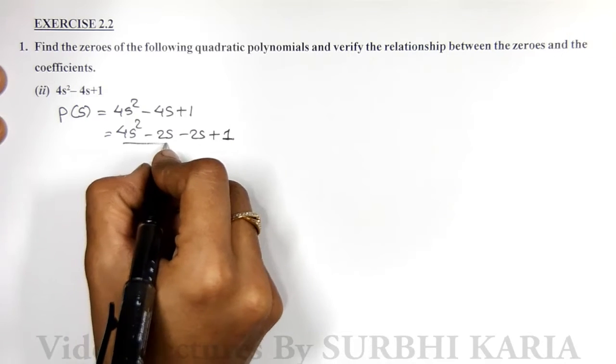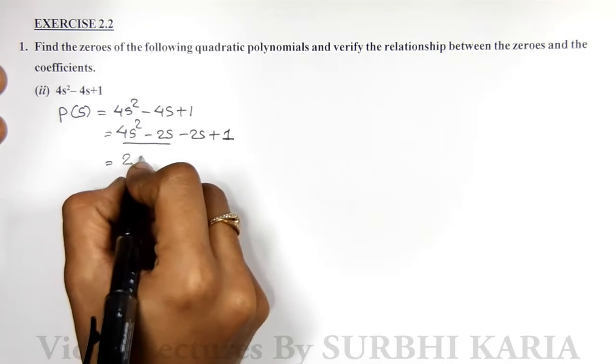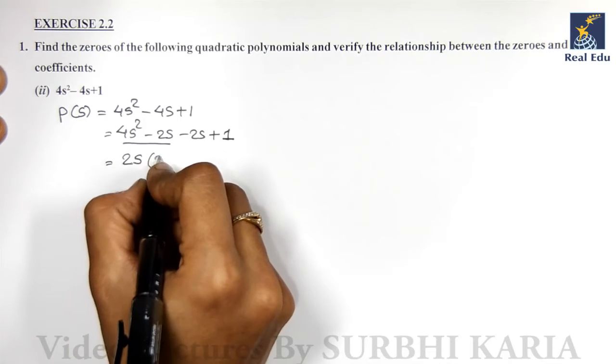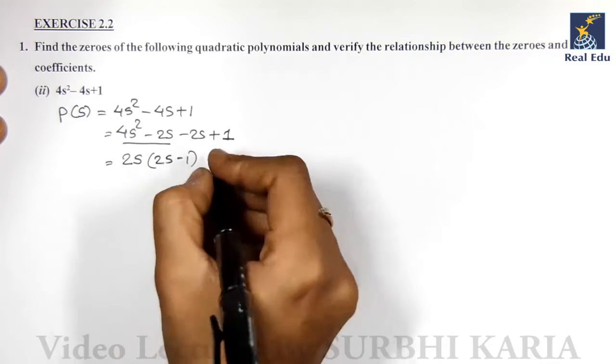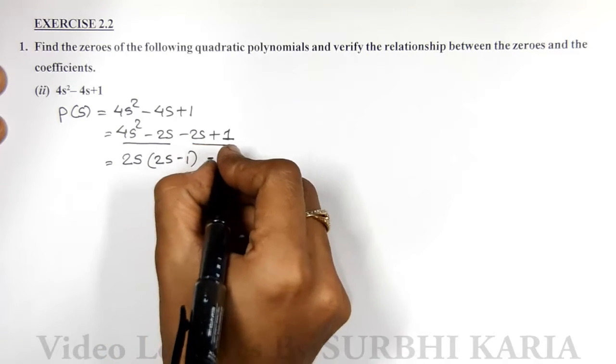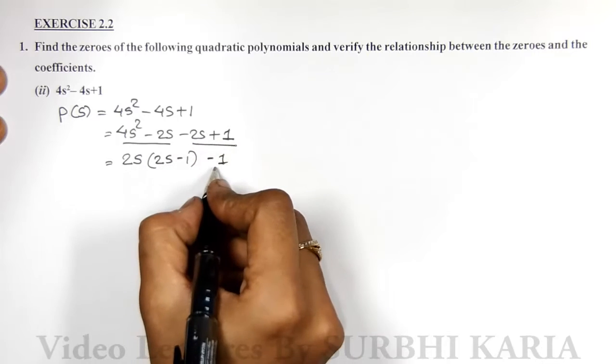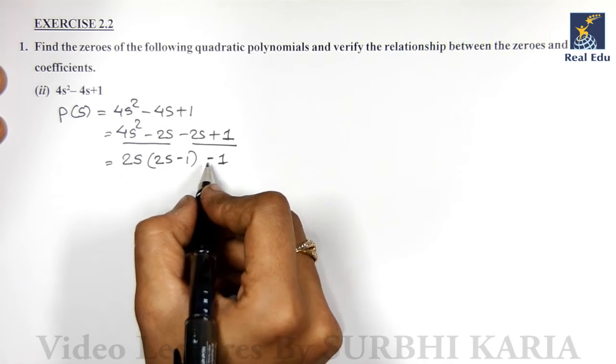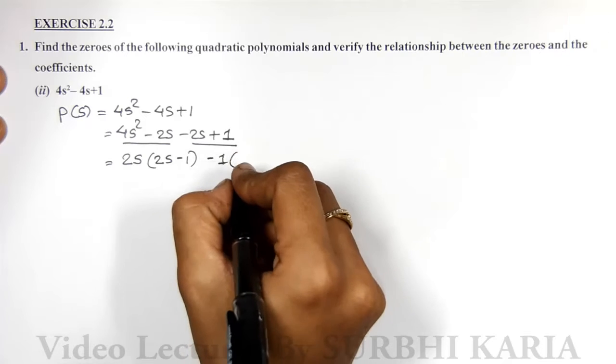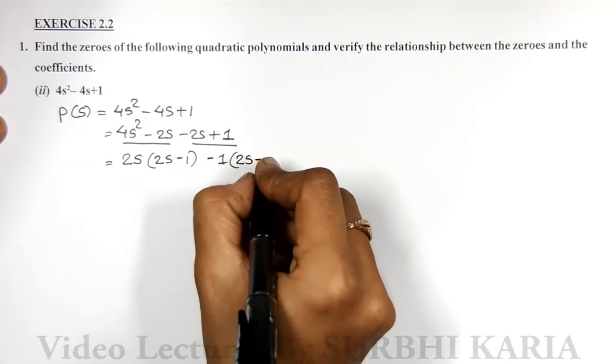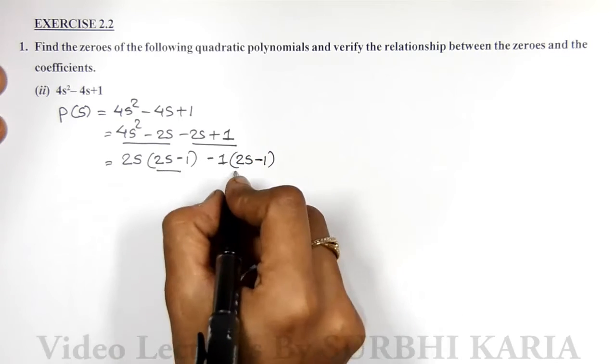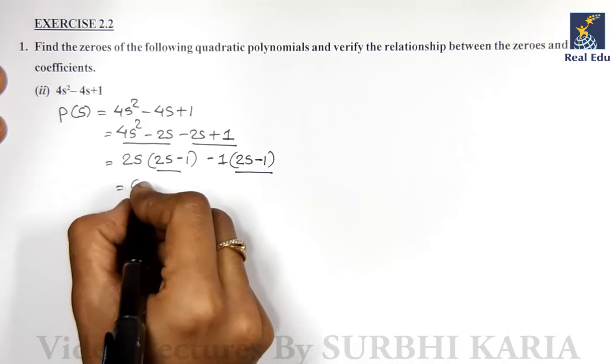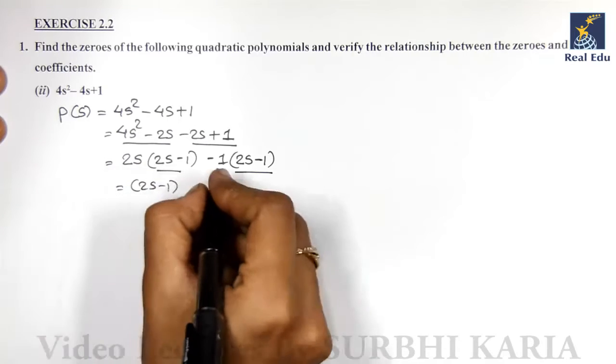Taking out common from both: 2s is common, leaving 2s - 1. From the second pair, -1 is common. Remember, the minus sign is there, so -1 is taken out and internal signs change: 2s - 1. Again, 2s - 1 is common.